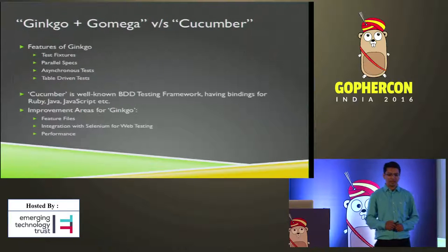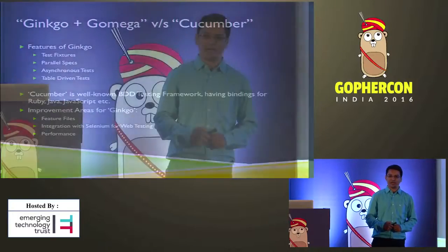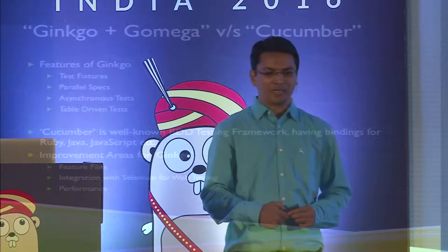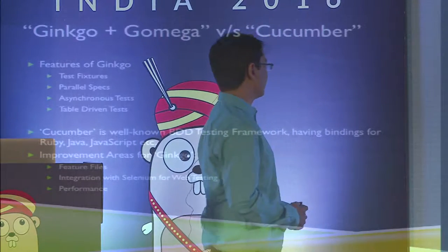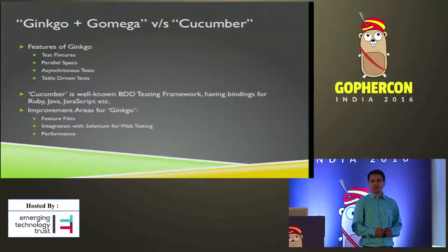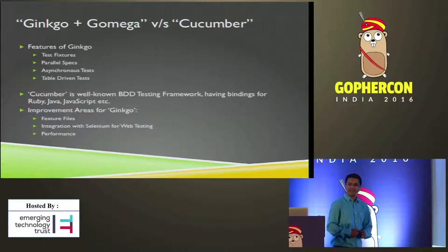If we compare Ginkgo plus Gomega versus the most famous BDD testing framework, which is Cucumber — and Cucumber has bindings for many languages including Ruby, Java, and JavaScript — the major drawback in Ginkgo plus Gomega is the performance, which we'll see later in the statistics. But Ginkgo has its own features: it provides test fixtures out of the box, you can execute your specs in parallel, you can execute them asynchronously, and it provides table-driven tests.